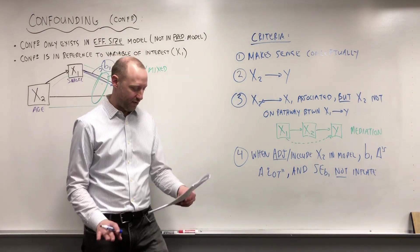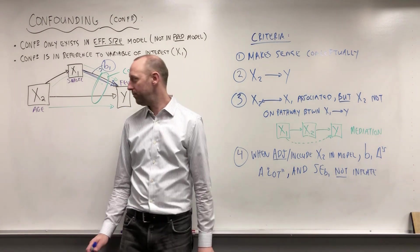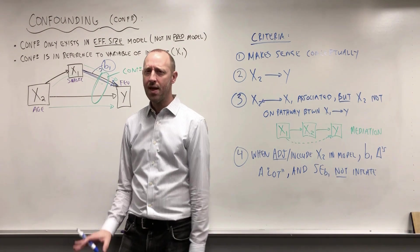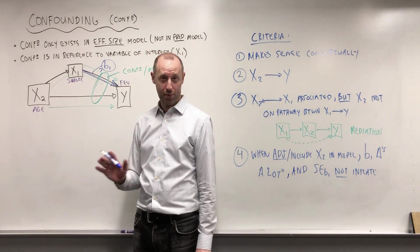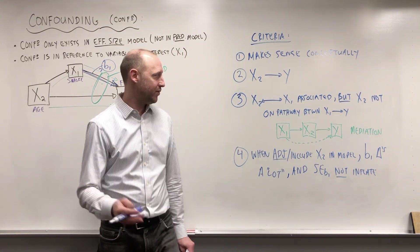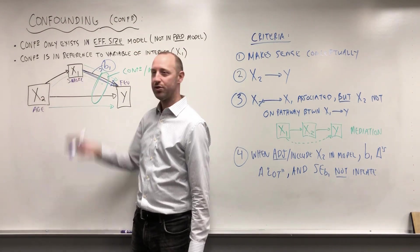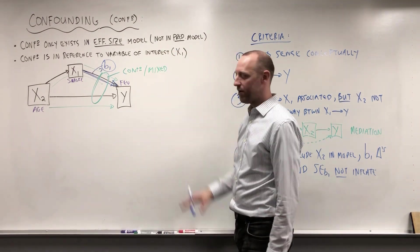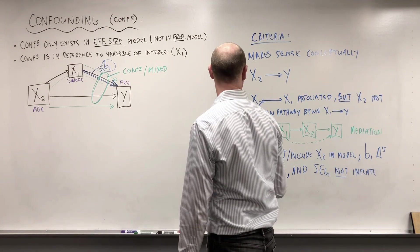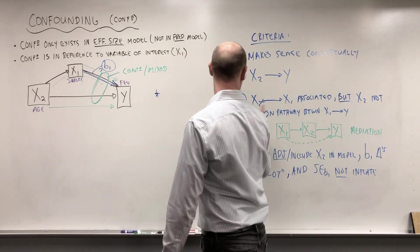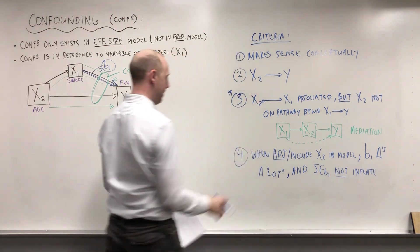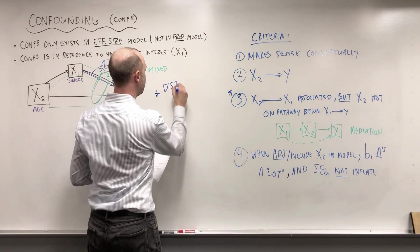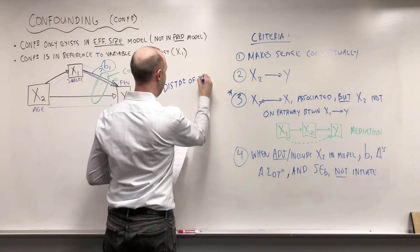So I want to close by saying a few things. Where does knowledge of confounding come from? Where does identifying which variables are confounders come from? Some of our knowledge can come from previous understanding or previous studies. So we might know from our previous knowledge that X2 should be associated with X1. And I want to take this moment to say something I've forgotten I wanted to mention.